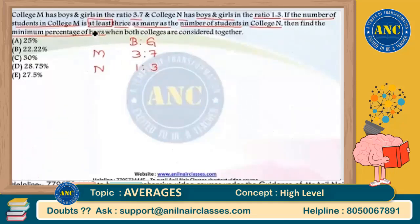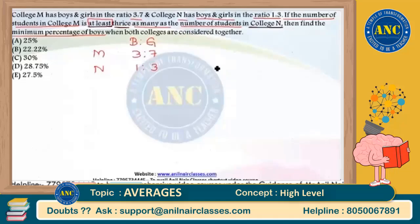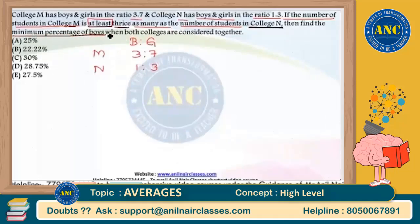What does 'at least three times' mean? If College N has 100 students, then College M should have a minimum of 300 students — it can be more than 300 but definitely not less. If College N has 30 students, College M will have a minimum of 90 students. Now, we need to find the minimum percentage of boys when both colleges are combined.